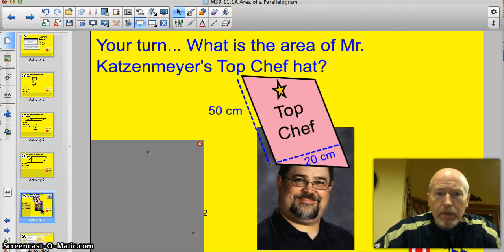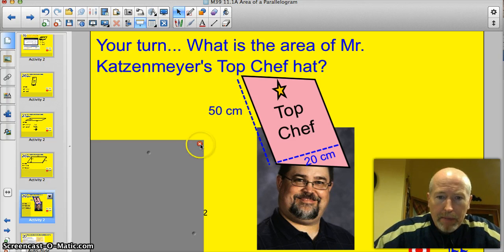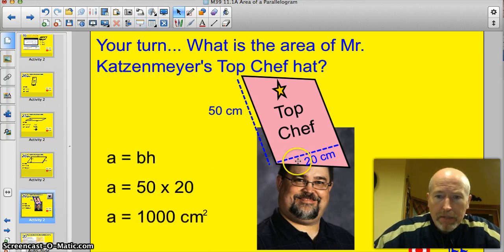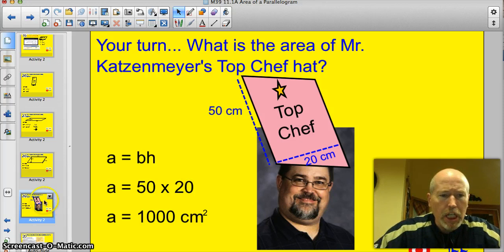All right. Here's kind of a fun one. Your turn. What is the area of Mr. Katzenmeyer's top chef hat? I'll pause it and see if you can figure it out. All right. Let's see how we did with the Papa Katz. Well, base times height. Base is 50. Height is 20. 1,000 centimeters squared. He makes a mean pot of chili.